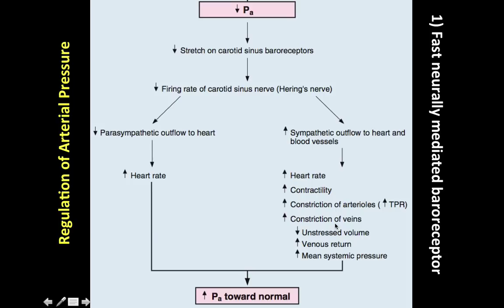Constriction of veins also results from sympathetic outflow. This causes a decrease in unstressed volume, which makes sense because increased stressed volume would defeat the purpose of raising blood pressure. Constriction of veins promotes increased venous return — the volume flowing into the heart via the superior vena cava — helping more volume enter the system and ultimately increasing mean arterial pressure.